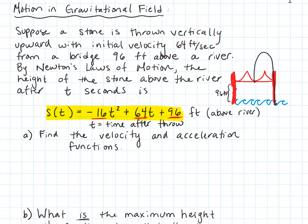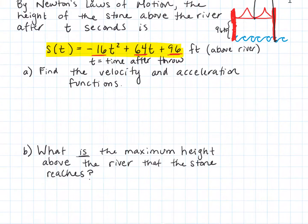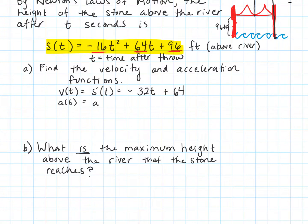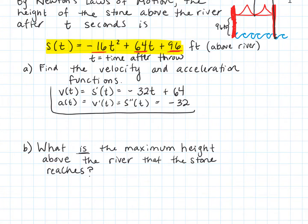Let's jump in and start by first finding the velocity and the acceleration functions. The velocity function is the derivative of the position function, so the derivative is going to be negative 32t plus 64. The acceleration function is the derivative of the velocity — the rate of change in velocity with respect to time — or equivalently, the second derivative of position. Notice that it comes out as a constant. Those are our velocity and acceleration functions.